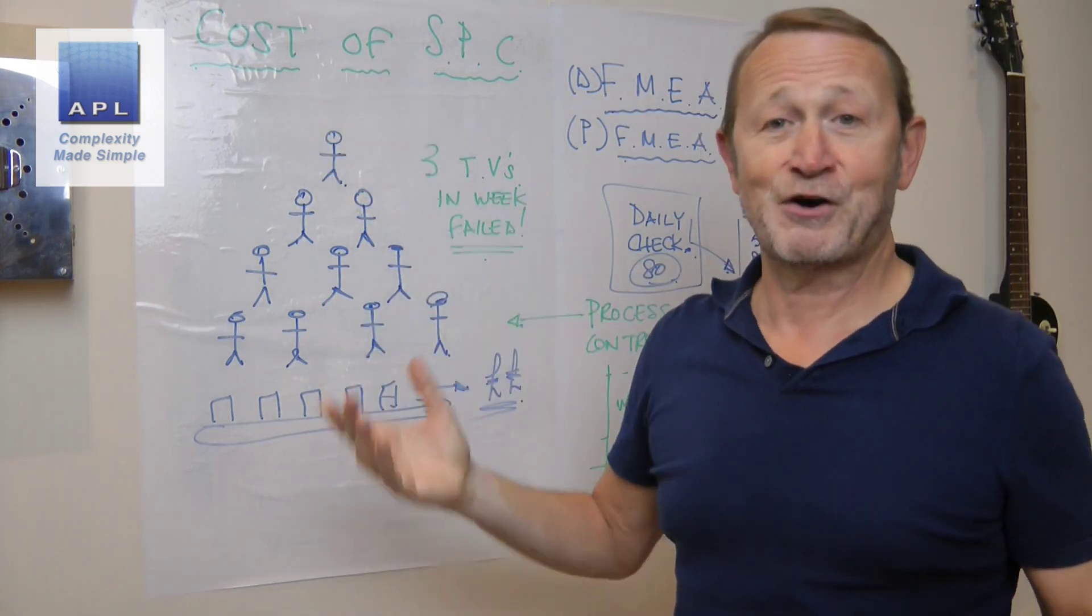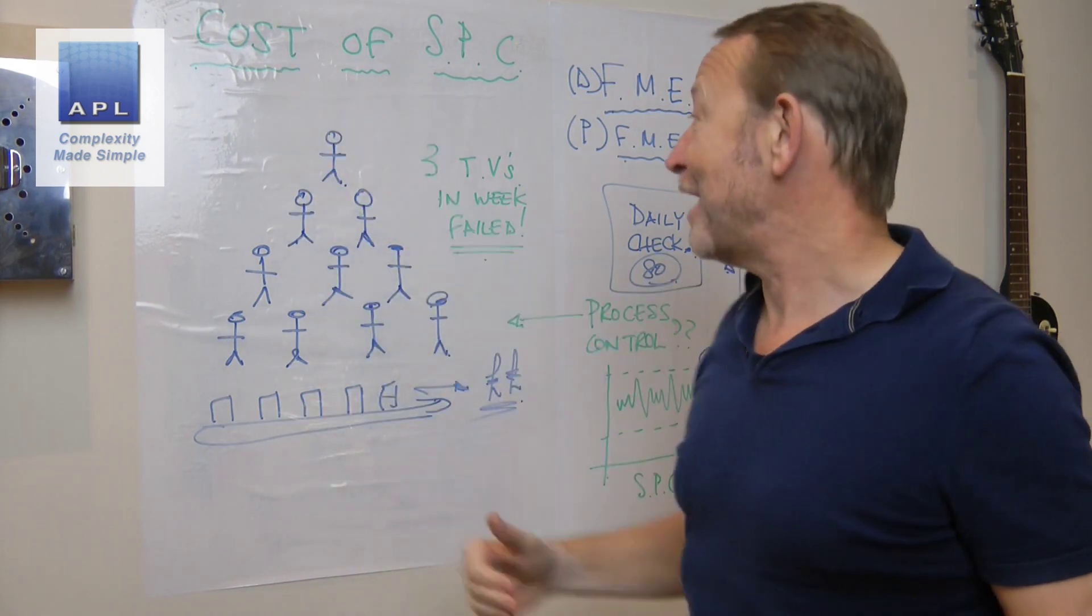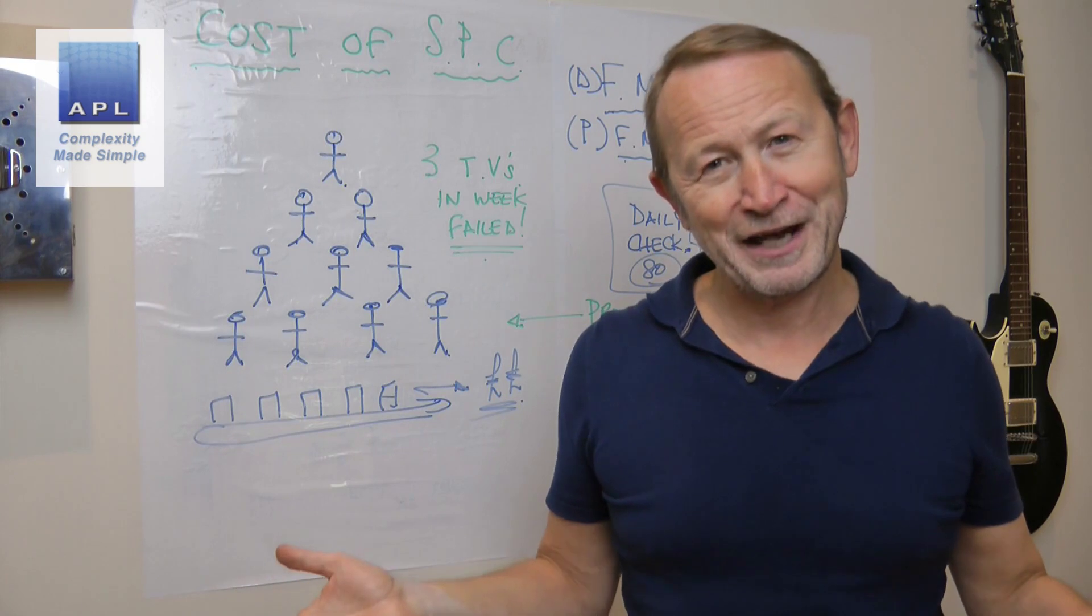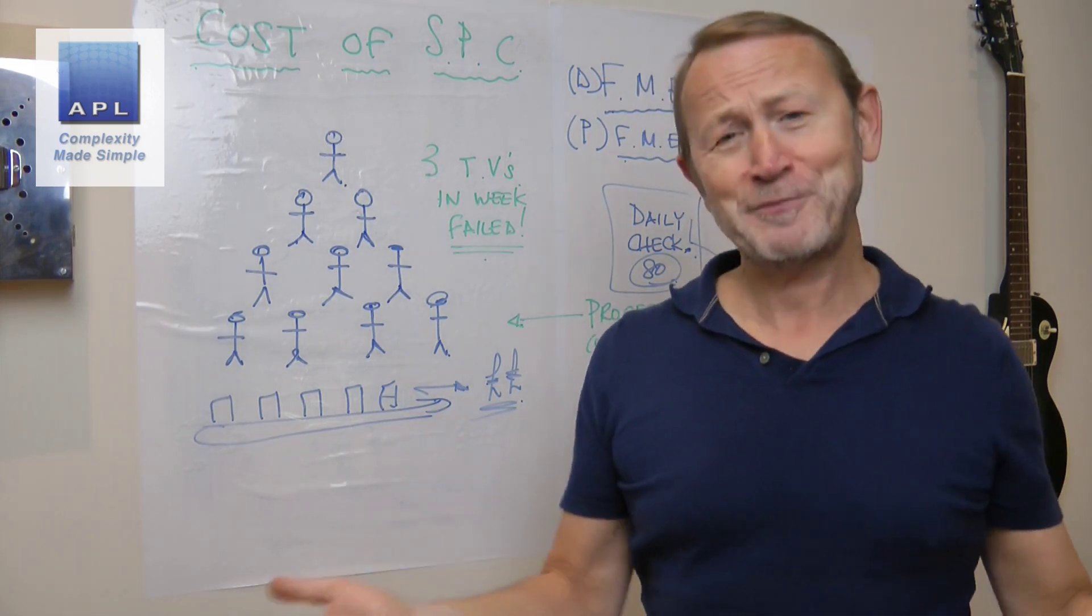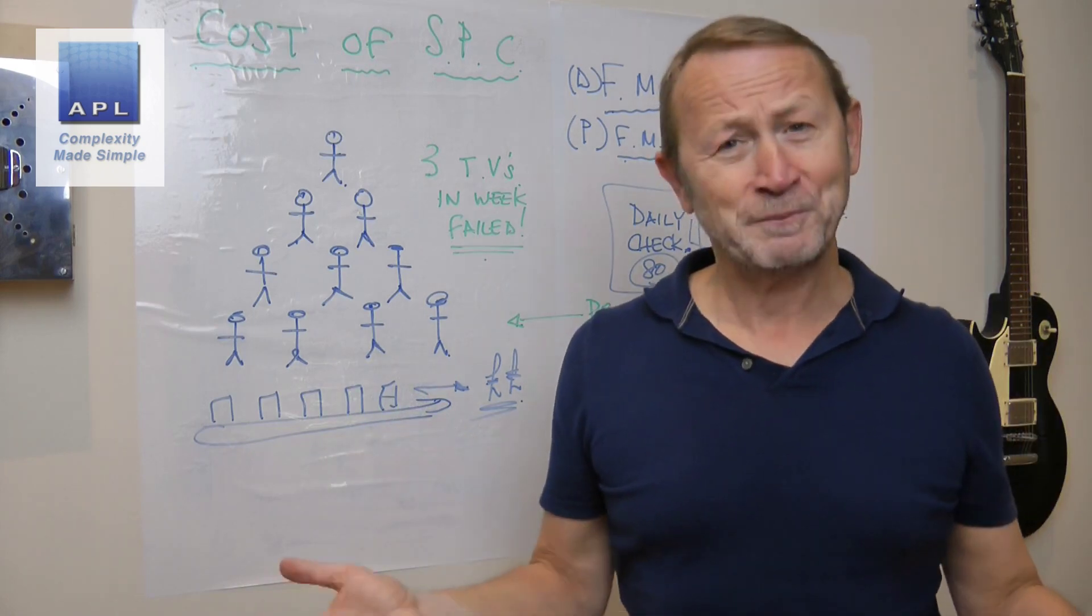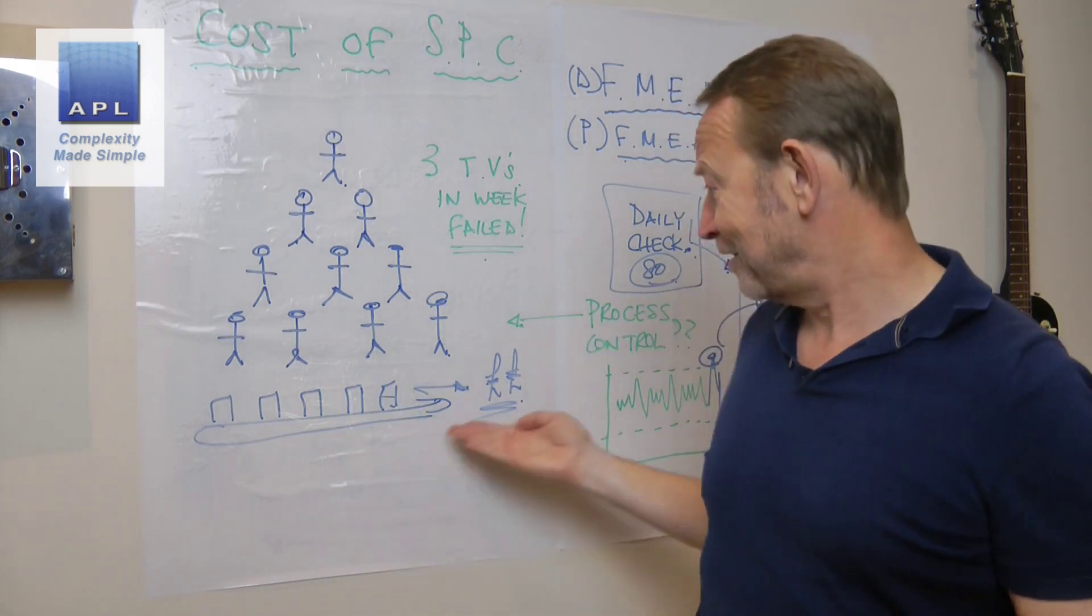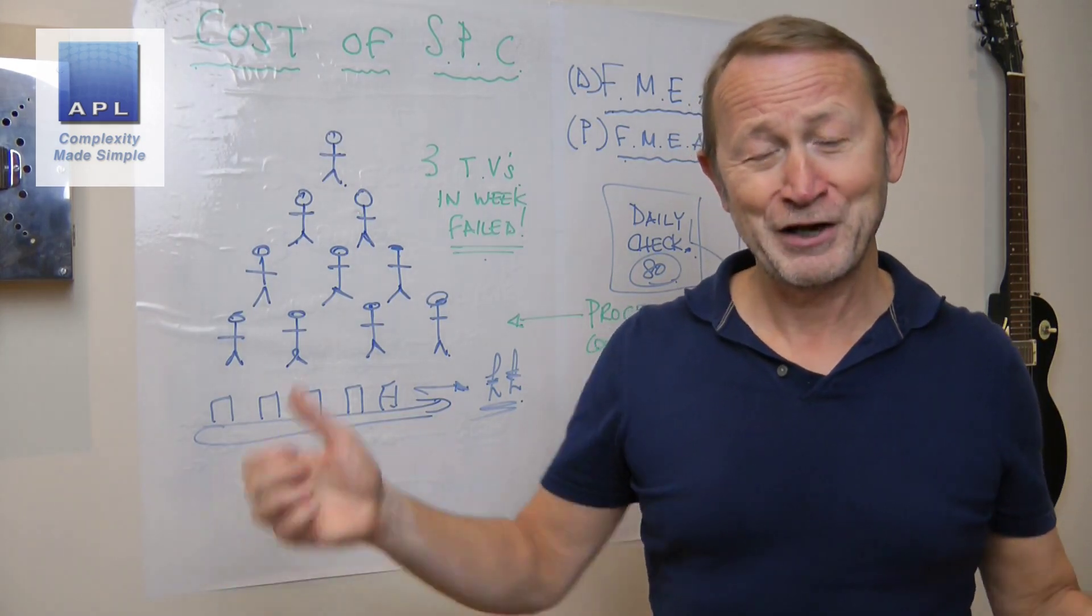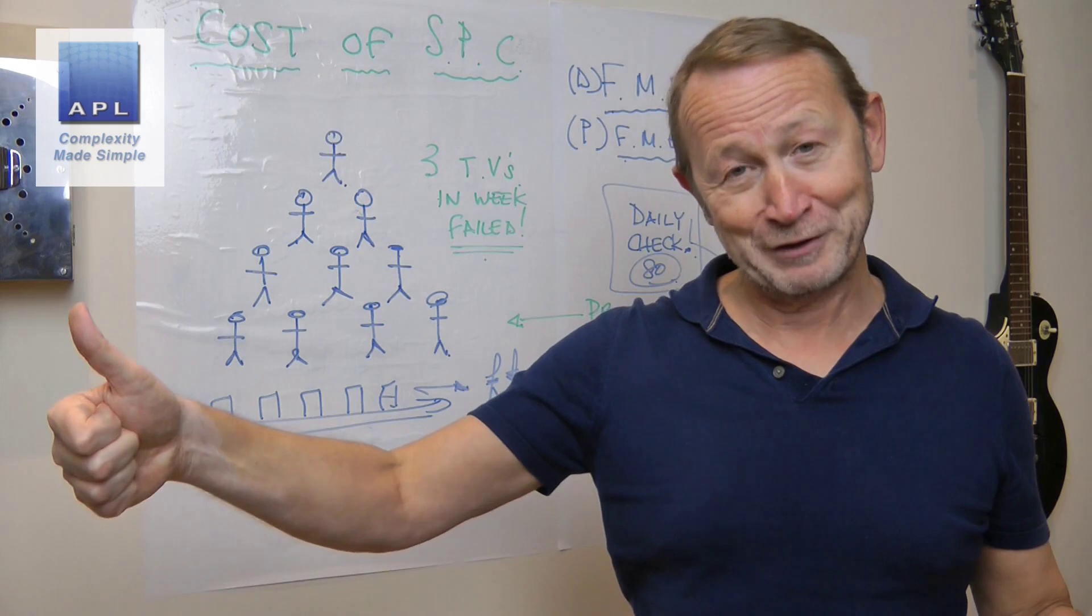So you tell me: SPC, is it the expensive way to get control, or is it the cheap way to get control? And by the way, finally, don't you want process control?